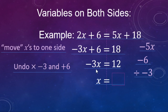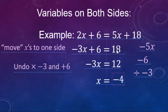Next, we undo the times negative 3 with a divide by negative 3. Negative 3x divided by negative 3 is just x, and 12 divided by negative 3 makes negative 4. So we moved the x's to one side, undid the plus 6 with minus 6 to get 12, then divided by negative 3 to get negative 4.